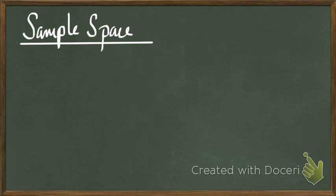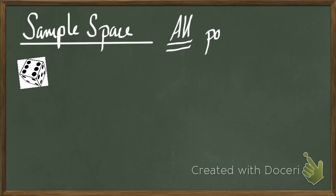So firstly, sample space. Hopefully this is a fairly easy one for you. The dice is going to turn up quite a lot during this, but the sample space is all of the possible outcomes. So what does that mean?